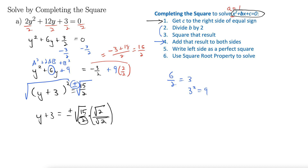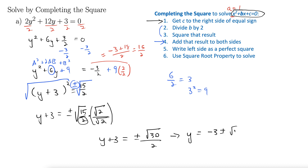I'm going to rationalize the denominator by multiplying by rad 2 over rad 2. That gives us y plus 3 equals plus or minus rad 30 all over 2. Finally, subtracting 3 from both sides gives us y equals negative 3 plus or minus rad 30 over 2. Some people like to write this all over a single denominator by multiplying by 2 over 2, giving negative 6 plus or minus rad 30 all over 2.